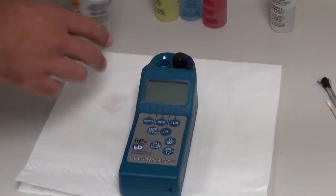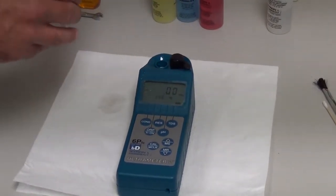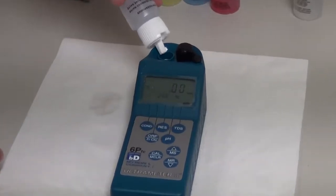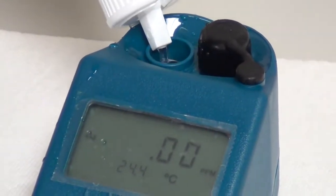So I'm going to fill my cell cup up three times, making sure that I fill the cell cup all the way, covering the temperature thermistor.